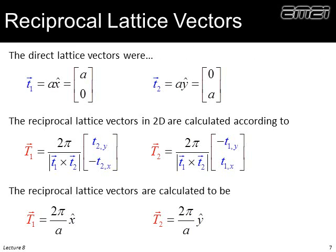On to the reciprocal lattice vectors. We start off with the direct lattice vectors and calculate the reciprocals using our equations. We end up with the reciprocal lattice vectors — interestingly, these are still pointing along just the x, y, z axes. Instead of having magnitude A, which we did on the direct lattice, our reciprocal lattice vectors have a magnitude of 2π divided by A, which makes intuitive sense following our last lecture.